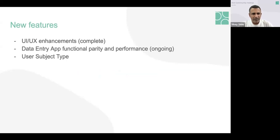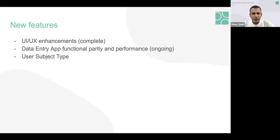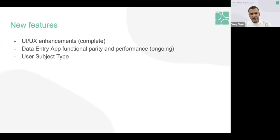In terms of new features, there are basically three different things we are working on. There are some UI/UX enhancements, which we covered during the last implementation meet, primarily initiated by Leadership for Equity and the TJP, which we'll talk about later. There's also significant work on trying to bring the data entry app — the browser-based app — to functional parity with the Android app. And there's something about user subject types which some of you might find interesting.